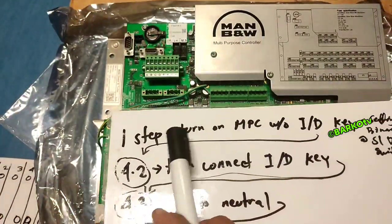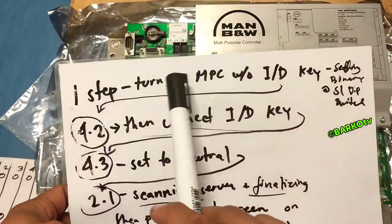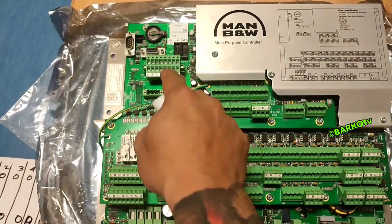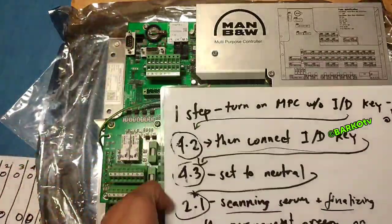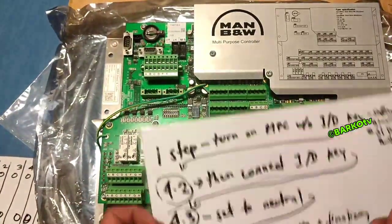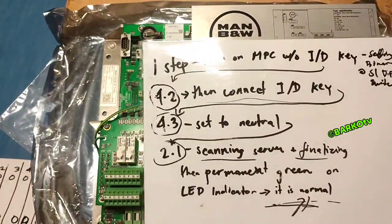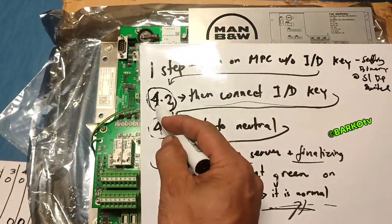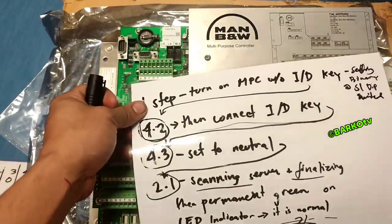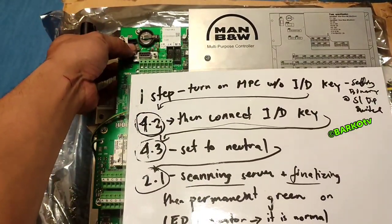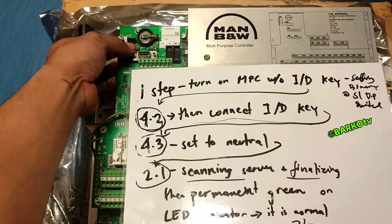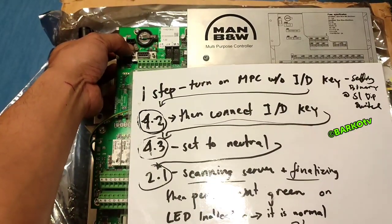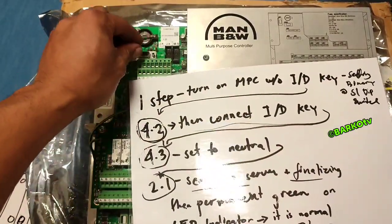For step one, without the ID key, turn on and get ready, then wait for the alarm 4-3: four red and two green indicating lights. When the indicator shows four red and two green, connect the ID key here.